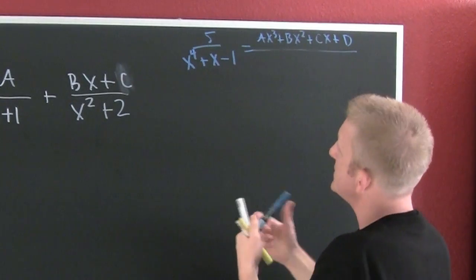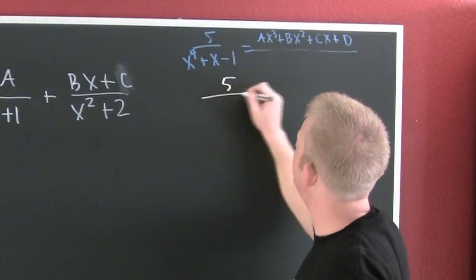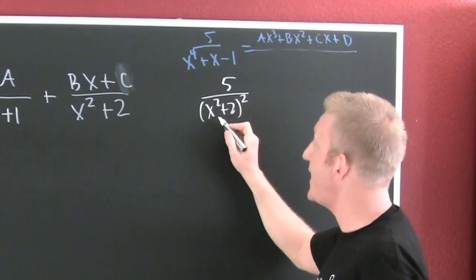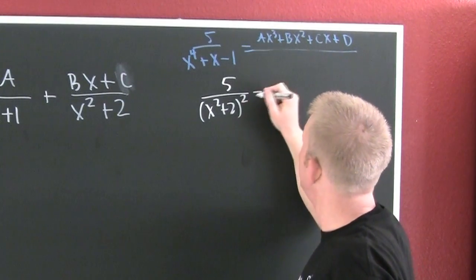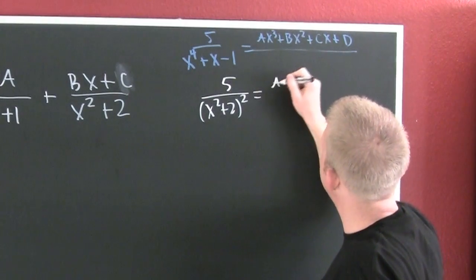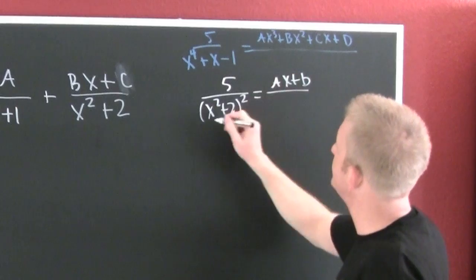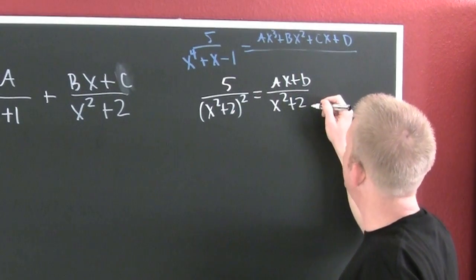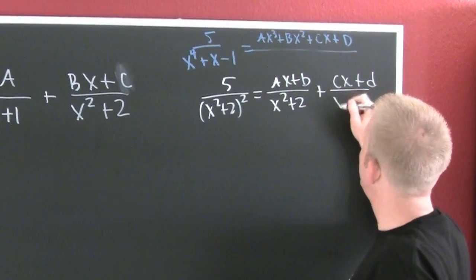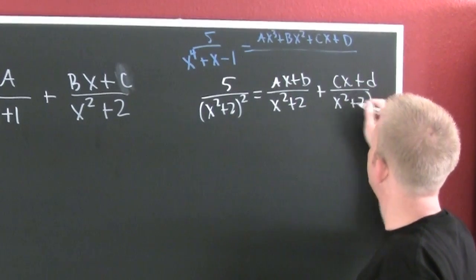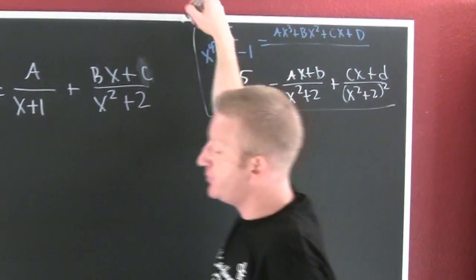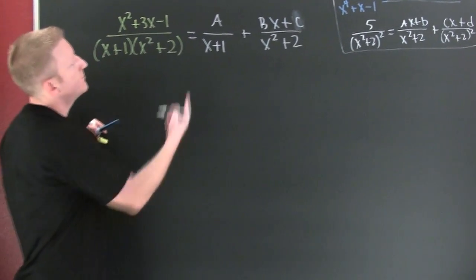What if you had a similar situation — something like five over (X² plus 2) squared? Now you have repeated nonlinear factors. So then this is AX plus B all over multiplicity one (X² plus 2), plus CX plus D over (X² plus 2) squared. I would have to take those two into account. So now we regress back here.